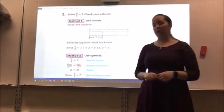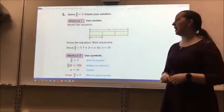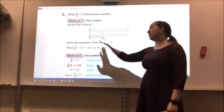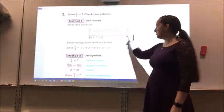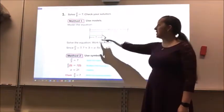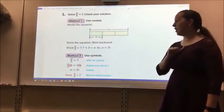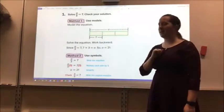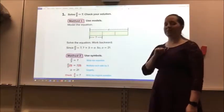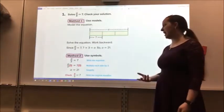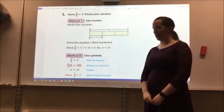Let's take a look at a couple of examples. The first example says solve A divided by 3 equals 7. I can check my solutions. Method 1, I can use a model. I model the equation A divided by 3, and each one of these parts equals 7. Solve the equation by working backwards. Since A divided by 3 equals 7, 7 times 3 has to equal A. So A has to be 21.